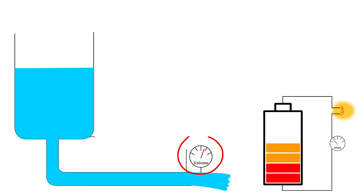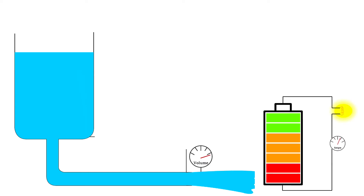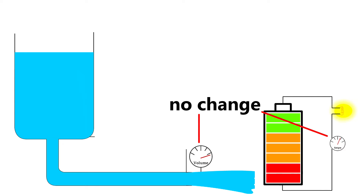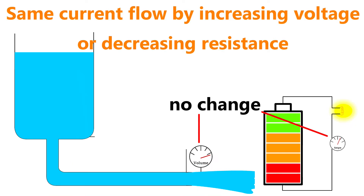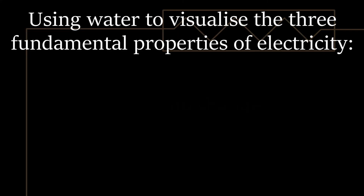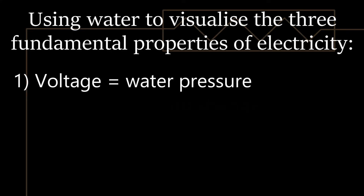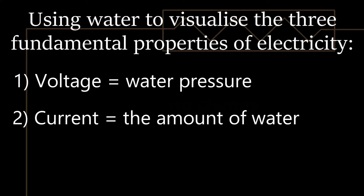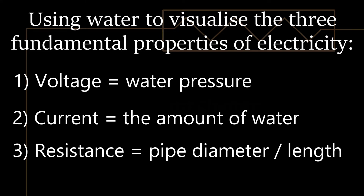If you watch the water volume gauge and the amp meter, you can see that we get the same increase in water flow and current flow by either increasing the water pressure and voltage, or by decreasing the resistance by making the pipe or wires thicker. Both voltage and resistance can be used to control current flow. So now we have our three key factors: voltage is the equivalent of water pressure, current is the equivalent of the amount of water flowing, and resistance is the equivalent of pipe diameter and length.